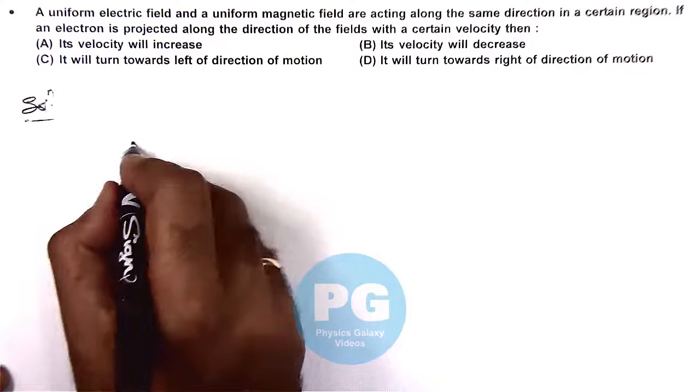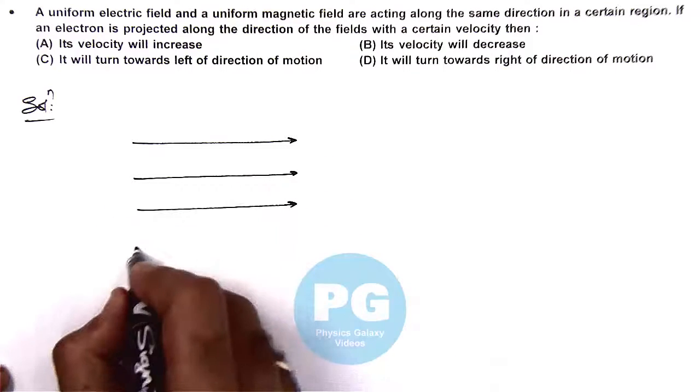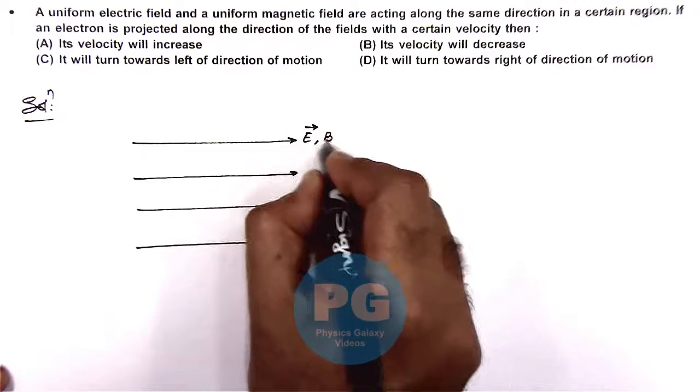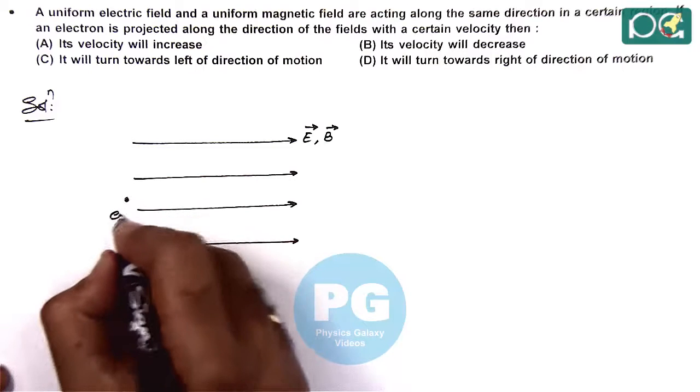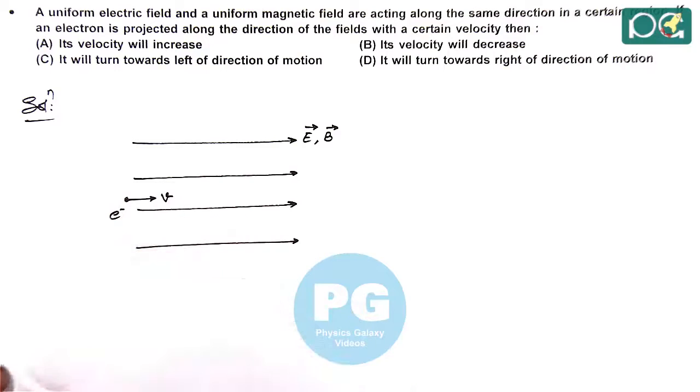If we visualize the case from left to right, the electric and magnetic fields exist in this region. E vector and B vector are both in this direction, and an electron with negative charge is projected with a velocity v.